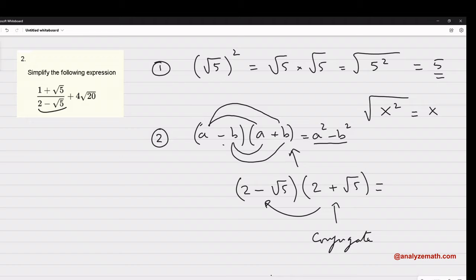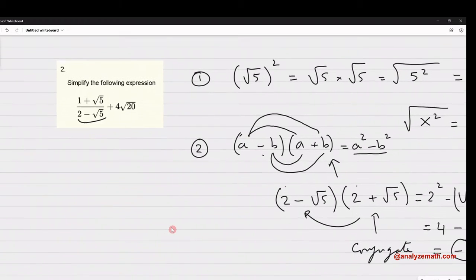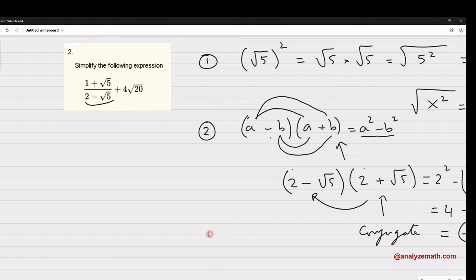Now, if you do this, what do you get? Apply this here. You will get 2 power 2, 2 square, minus square root of 5 square. 2 power 2 is 4. Now, this we have seen here. It's equal to 5. And the whole thing simplified to negative 1. Now, the problem is, how do we apply it here?